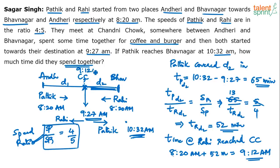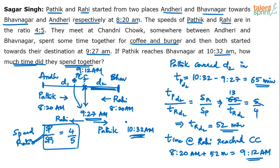Since Rahi reached Chandni Chowk at 9:12am, that is their meeting time. They left at 9:27am. So the time they spent together is from 9:12am to 9:27am, which is 9:27 minus 9:12 — that's 15 minutes.